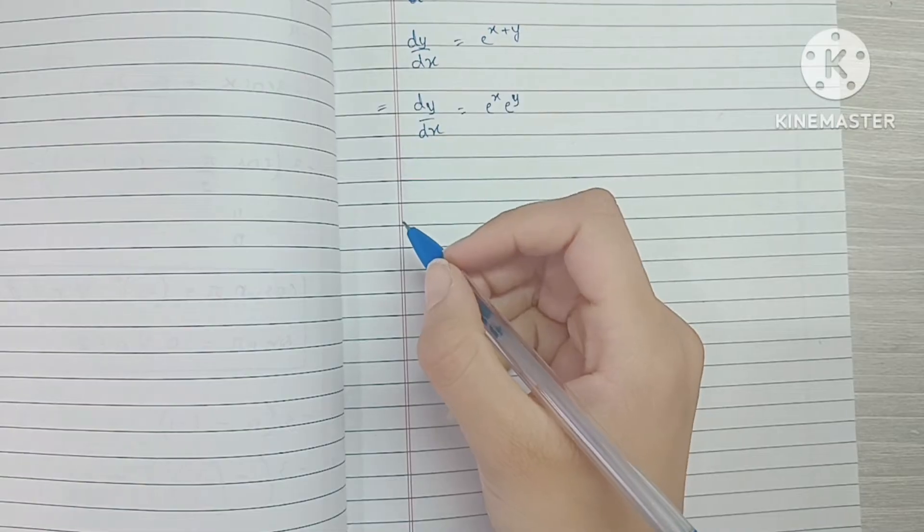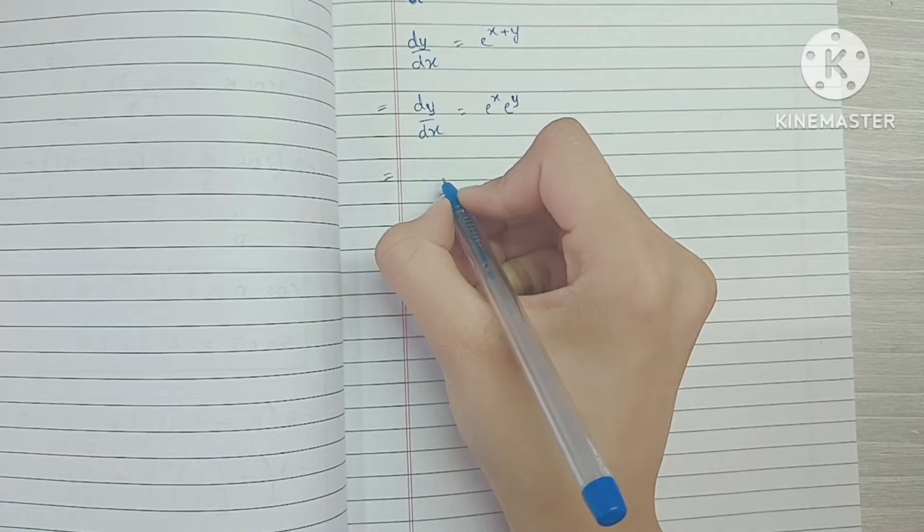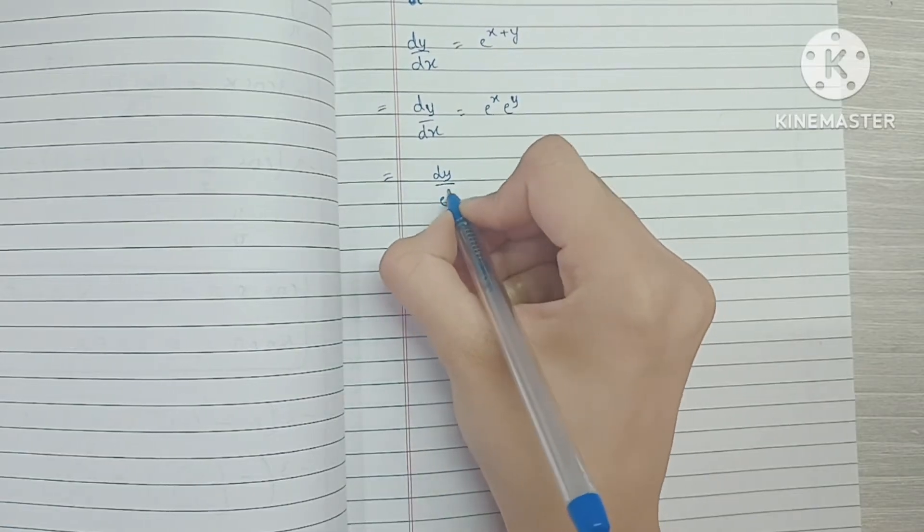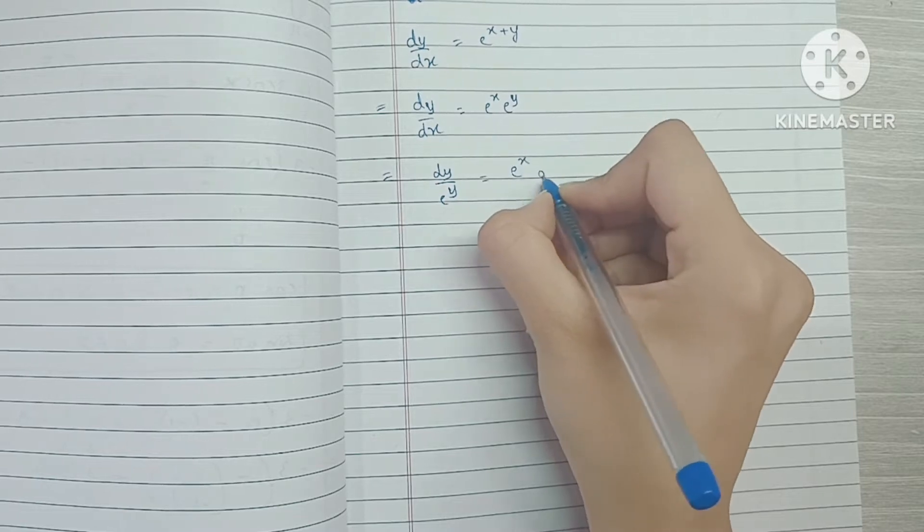Then what we're going to do is we're going to take the y terms to one side and the x terms to the other side. So this becomes dy upon e raised to y and it's equal to e raised to x dx.